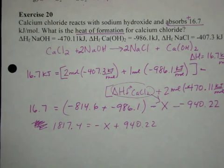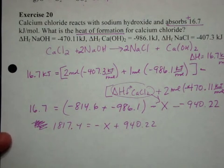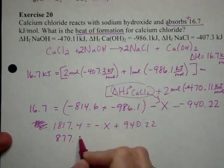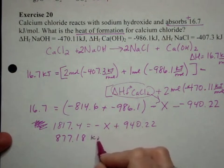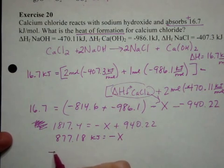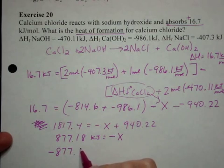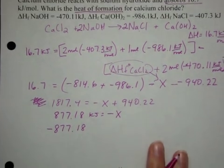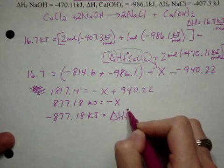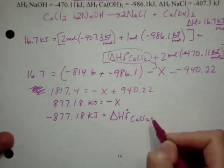So then we subtract the 940.22 and we get 877.18 kilojoules equals negative x. So then we have to switch the signs here. So negative 877 kilojoules equals the enthalpy of formation for calcium chloride.